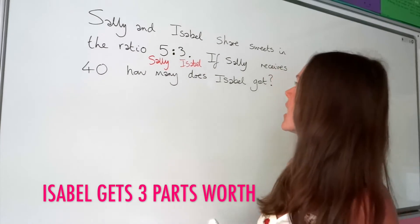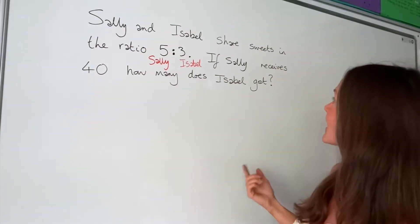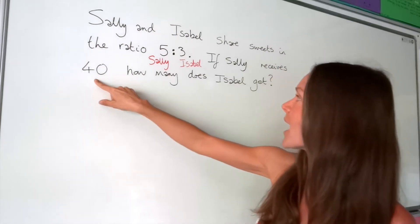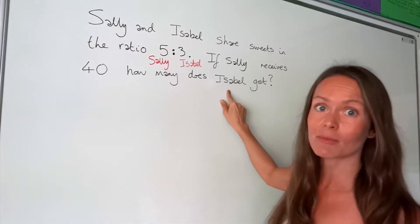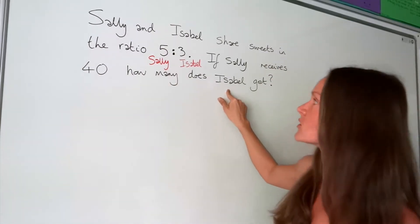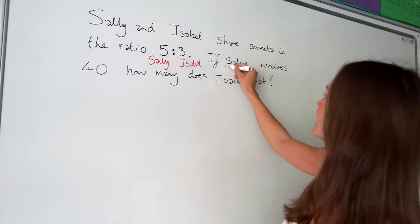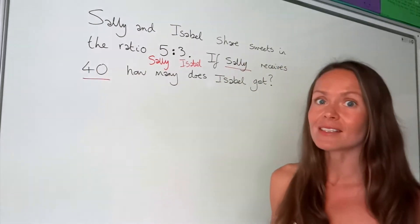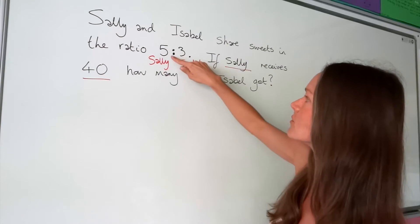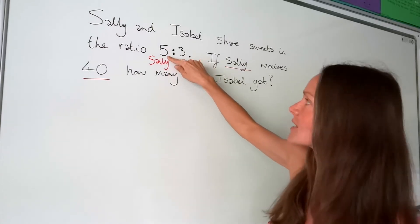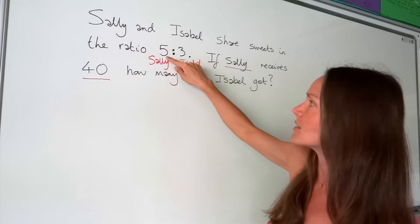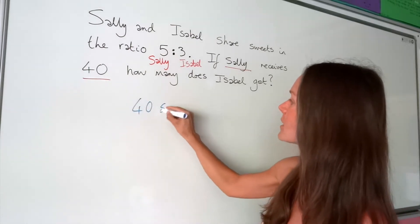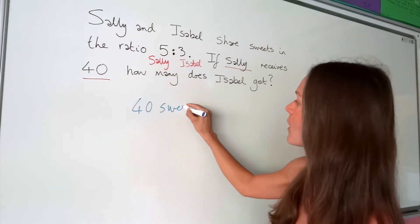We know that Sally receives 40 sweets altogether and we need to work out how many Isabel gets. The information is that Sally receives 40. If we look at the ratio, Sally is five parts, so those 40 sweets must be equal to five parts.